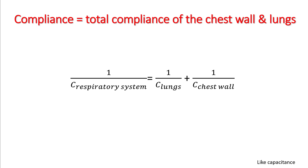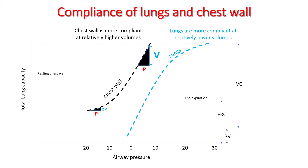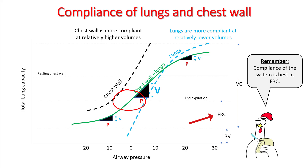When we talk about compliance, we are talking about the total compliance of the chest wall and the lungs. As lung volume increases, the lungs become stiffer; however, the chest wall becomes less stiff with higher lung volumes. The compliance of lungs and chest wall combined is shown by a green line, and you can see that at both the top and bottom the system is stiffer, while right in the center compliance is greatest.